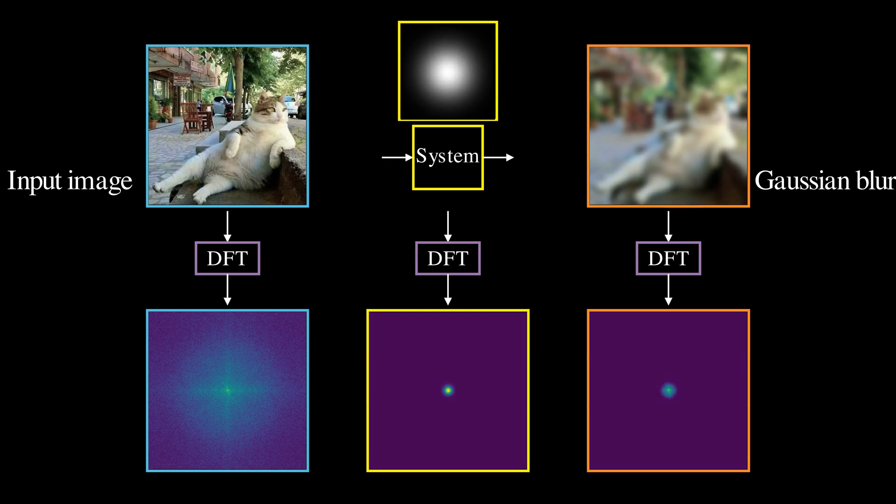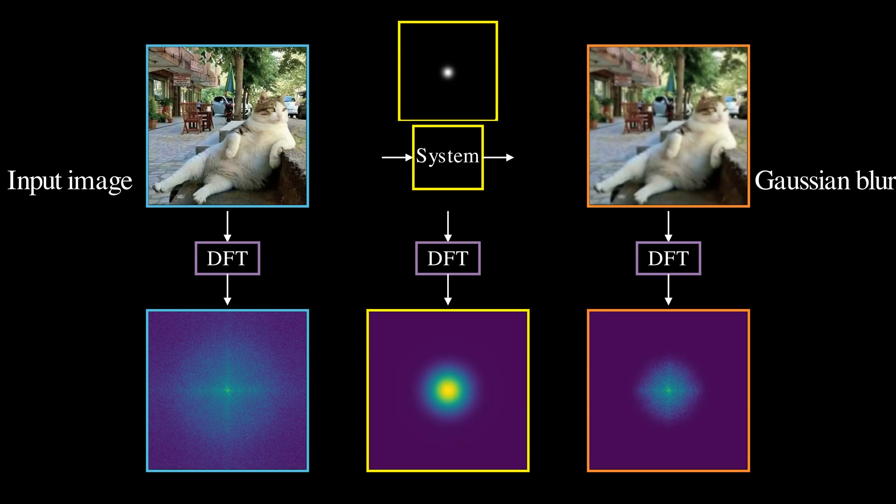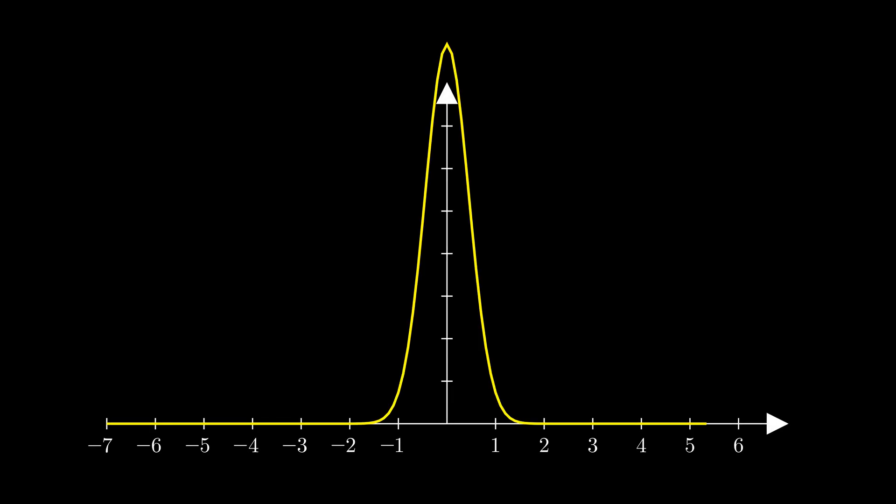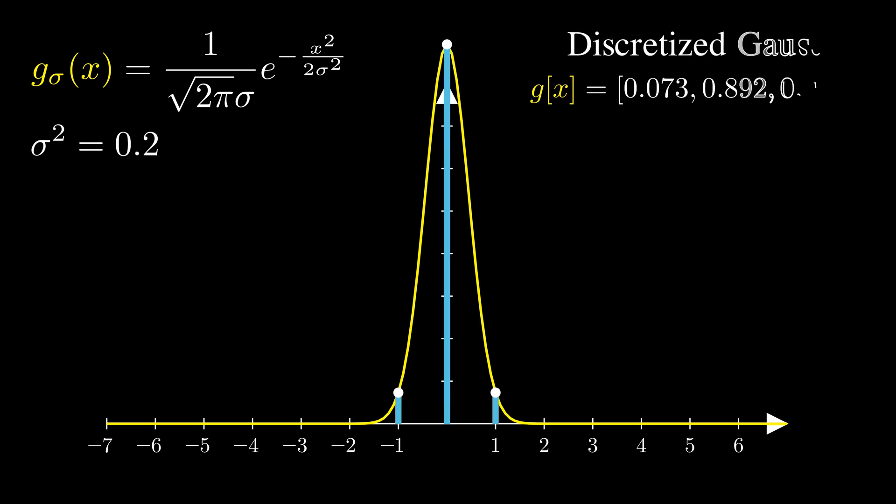The Gaussian filter makes a great blur filter. But how do we actually compute it? The Gaussian function is continuous, while images are discrete. So we need to create a discrete version of the Gaussian function. Here is the equation of Gaussian function with variance 0.2. A simple approach is to sample the continuous curve at certain points to get the coefficients. We then renormalize them so that the sum equals 1.